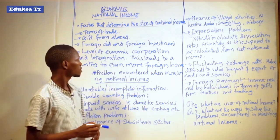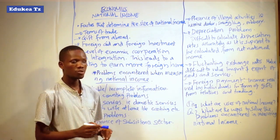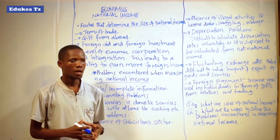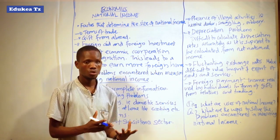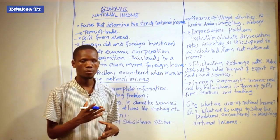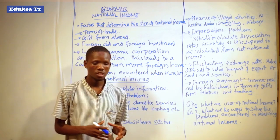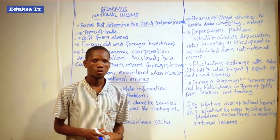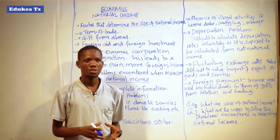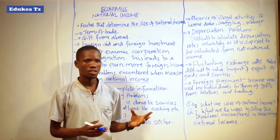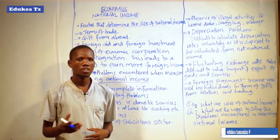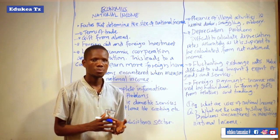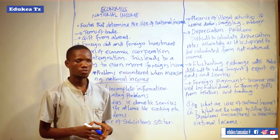A country with a large amount of gifts from abroad means this will contribute to the rise of national income, rather than a country that receives little or no gifts at all. This applies especially to developing countries — for example, most African countries, especially in East Africa, such as Tanzania and our neighboring countries like Burundi and Rwanda, receive different forms of gifts from abroad.